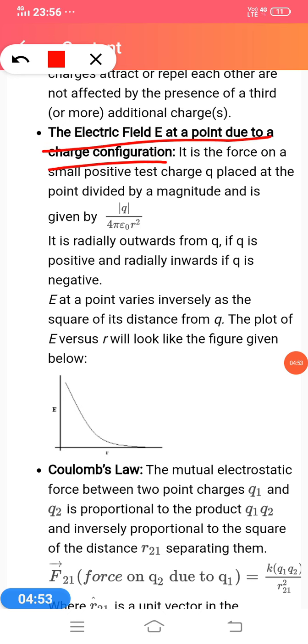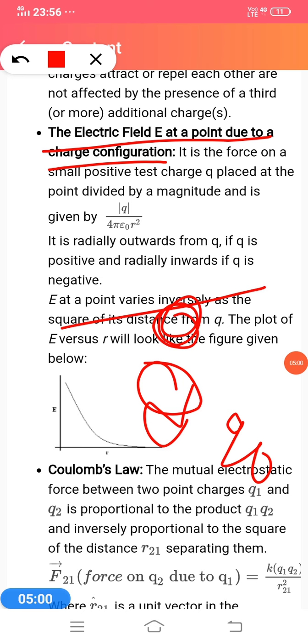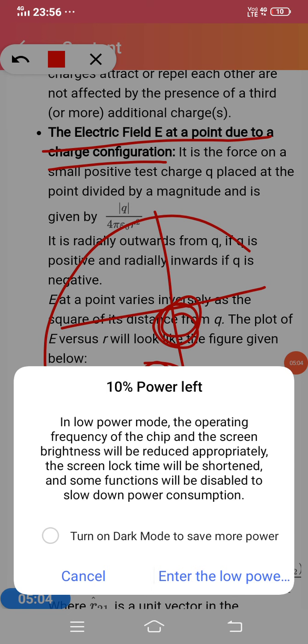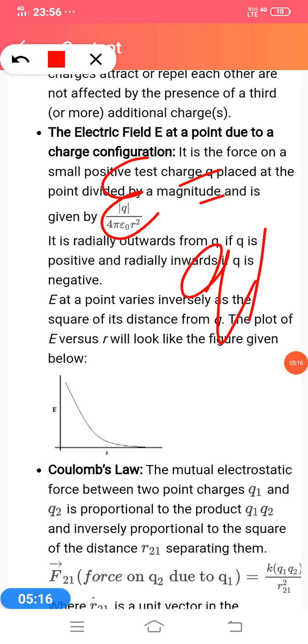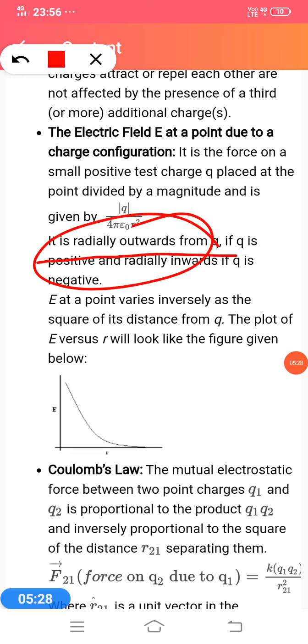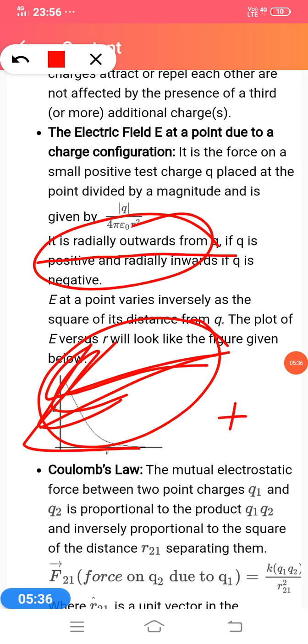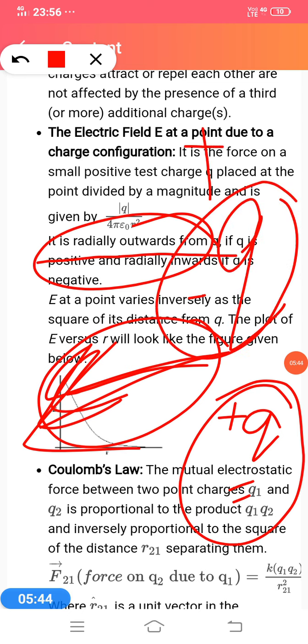The electric field E at a point due to charge configuration is the force on a small test charge at that point divided by its magnitude, which is q upon 4πε₀r². The electric field is radially outward from q if q is positive and radially inward if q is negative.